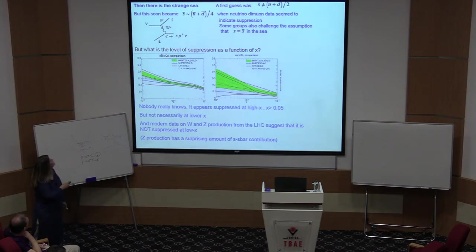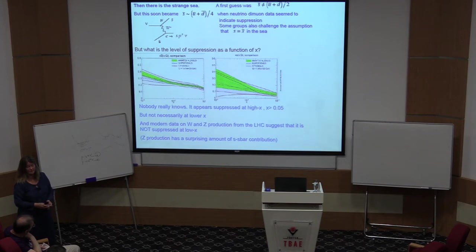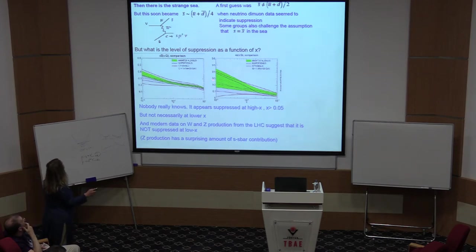But let's look at today's PDFs. This is the D bar, and this is the S bar. Now, if I look at them across X, I can see here at highish X, 10 to the minus 1, it is indeed suppressed. We take that across there, suppressed by about half. Is it still suppressed down at low X? Well, not necessarily. In fact, the problem is it's not really all that well known at all. But to just make an assumption that it's suppressed at all values would not be correct. And it's modern data on W and Z production at the LHC that suggests in fact that it's not suppressed at low X. Because when you're making the Z, there's a surprising amount of contribution from the strange-anti-strange in the Z.